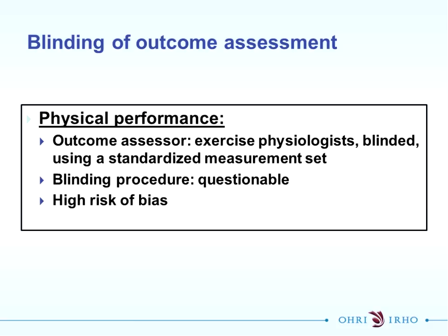The blinding procedure was questionable - they didn't give us any details about the blinding procedure. But these outcomes are more objective. There's been debate within the BMG executive: some of us would say unclear, some low, some high risk of bias. It depends on your standpoint and whether you think it would influence the physical performance results. The clinicians in our group went for more high risk of bias and the methodologists went for more low risk of bias. There's no right or wrong answer. If you went for low risk of bias that's perfectly acceptable, though it's probably more beneficial to err on the side of caution.